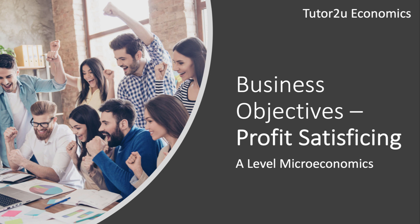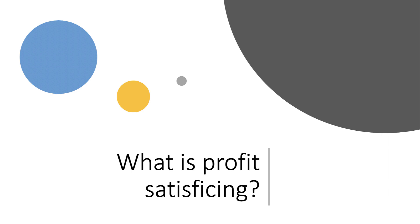Hi there and welcome to a video for Theme 3 Microeconomics about the concept of profit satisficing. Satisficing behaviour is an alternative business objective to maximising profits. What it means is that a business is seeking to make just enough profit to keep shareholders happy, or perhaps just enough for investors to be confident in the management they've appointed, but they're not necessarily maximising profits.